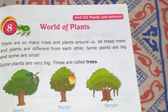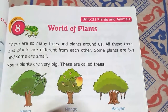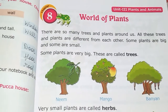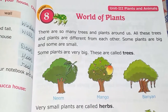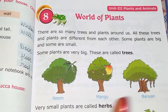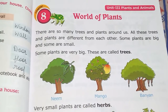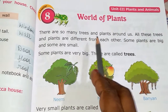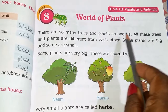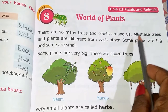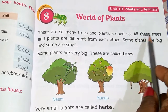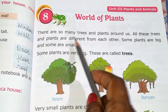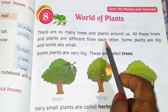Have you seen plants? We can see plants everywhere — whenever we look around ourselves we can see plants. There are so many trees and plants around us, and all these trees and plants are different from each other.